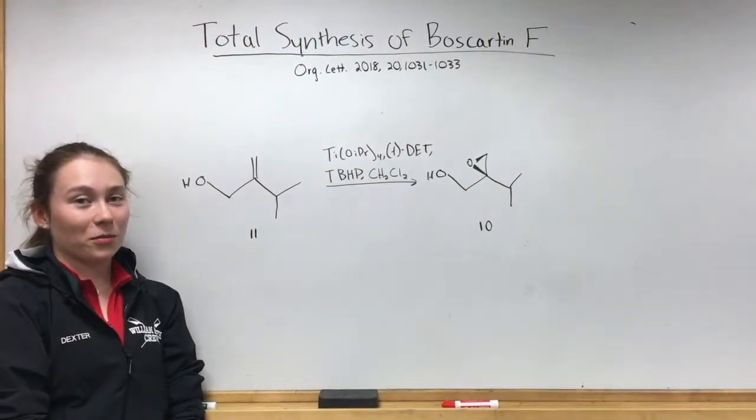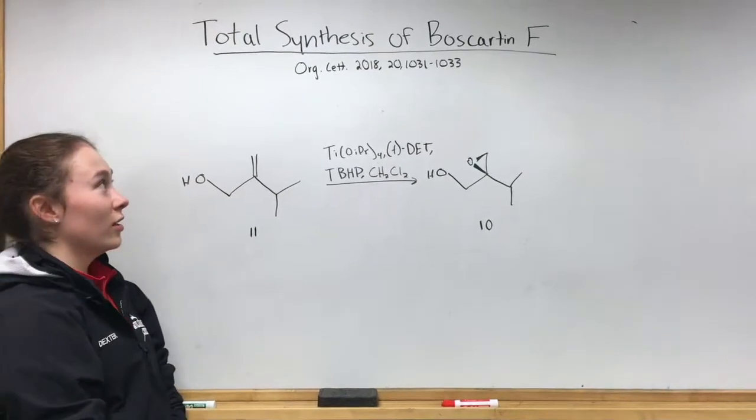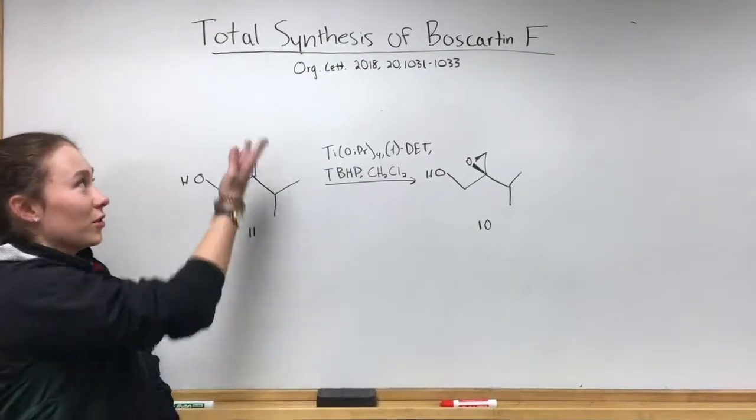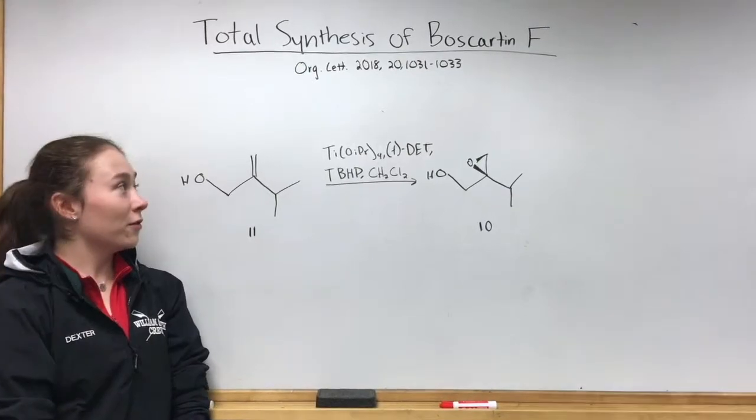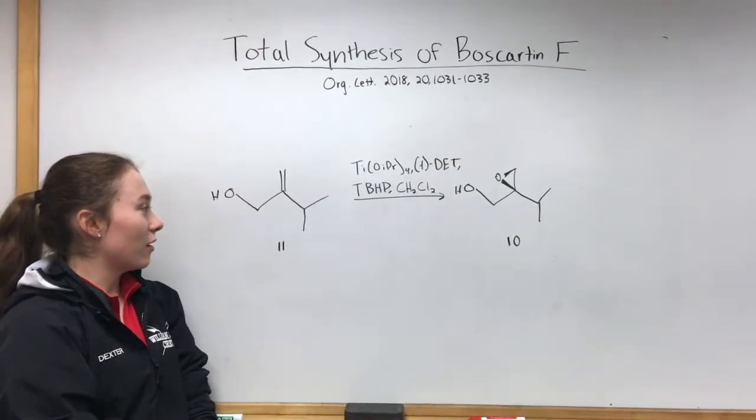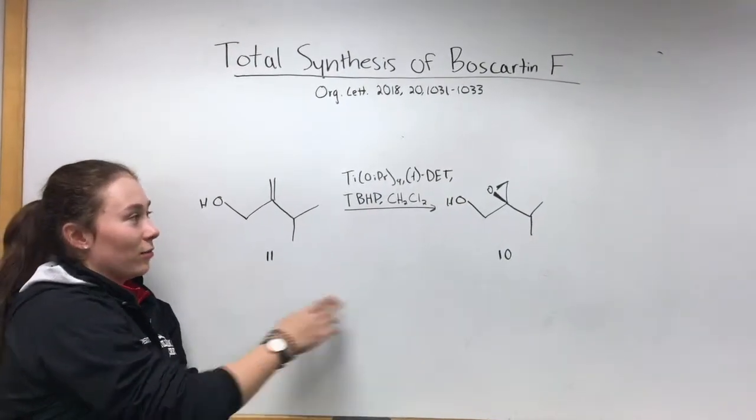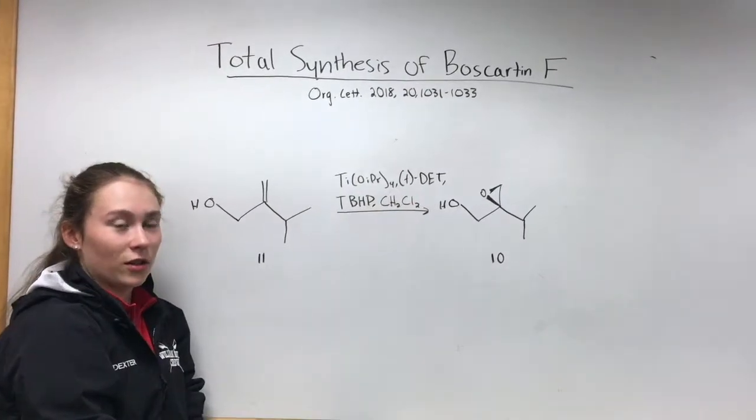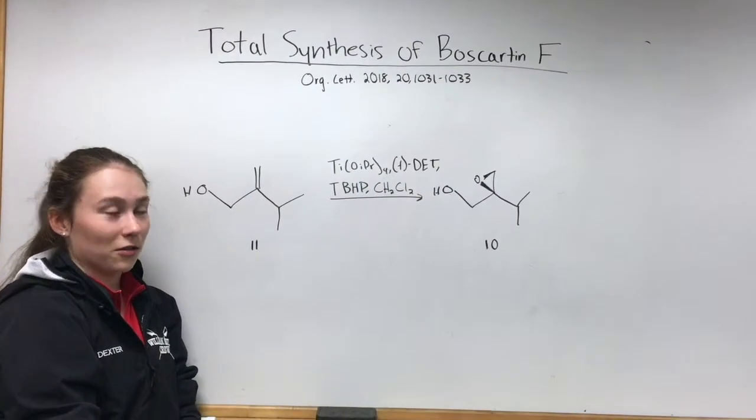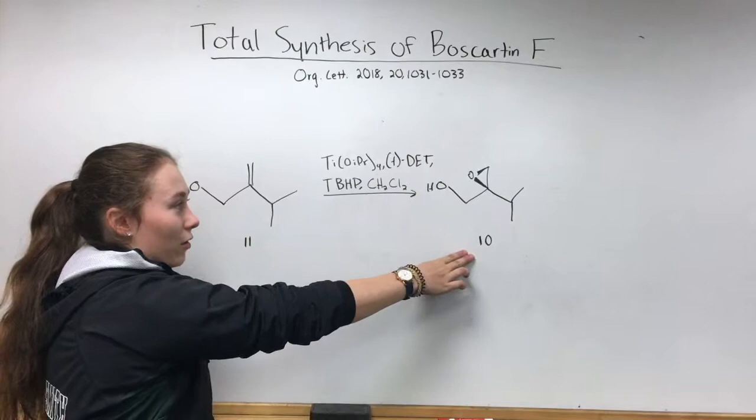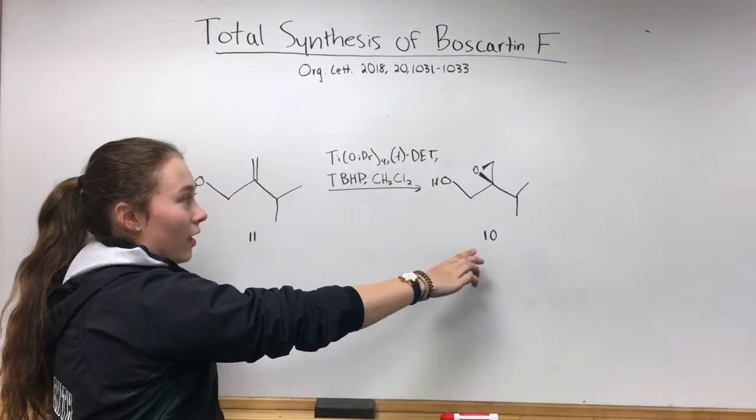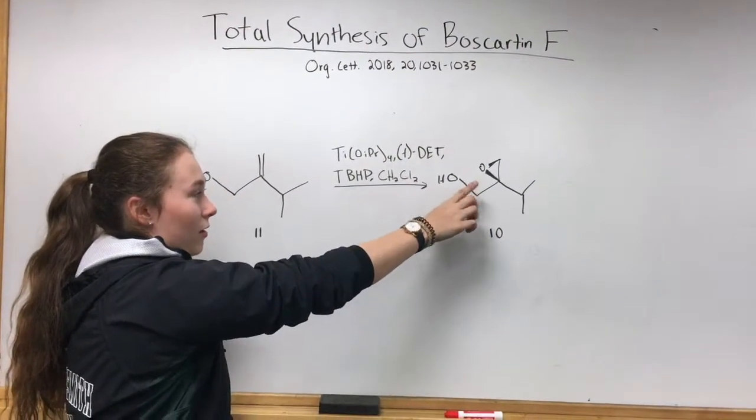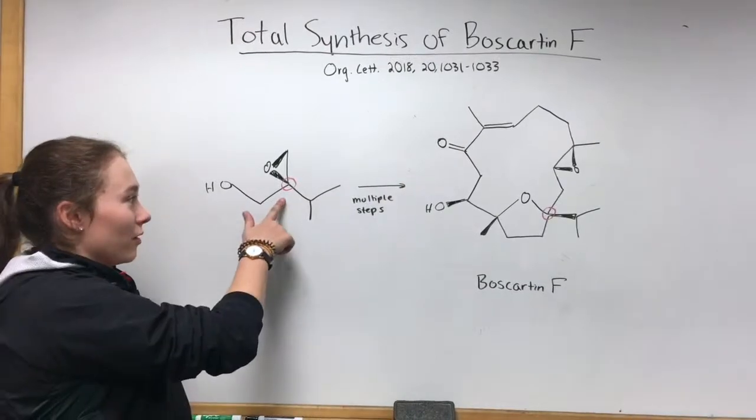The Sharpless Asymmetric Epoxidation is used in this example from the total synthesis of Boscarin F. You see the allylic alcohol, and then we have the plus DET, which makes this reaction enantioselective. We have our product with the epoxide on the beta face.